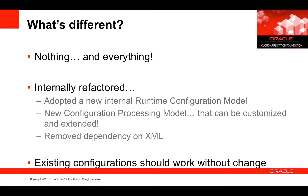So what's different? In Coherence 12.1.2 essentially nothing should have changed for existing users. Your configurations from Coherence 3.7.1 should work directly in 12.1.2, so for most people nothing will have really changed. But underneath the covers, really everything has changed. We've refactored Coherence 12.1.2 and adopted a new internal runtime configuration model. This required us to expose the runtime configuration model — so not only have we adopted a new one, we've made it public. One part of this refactoring means we changed how we process configuration, allowing configurations to be customized and extended, and removing some dependencies on XML.